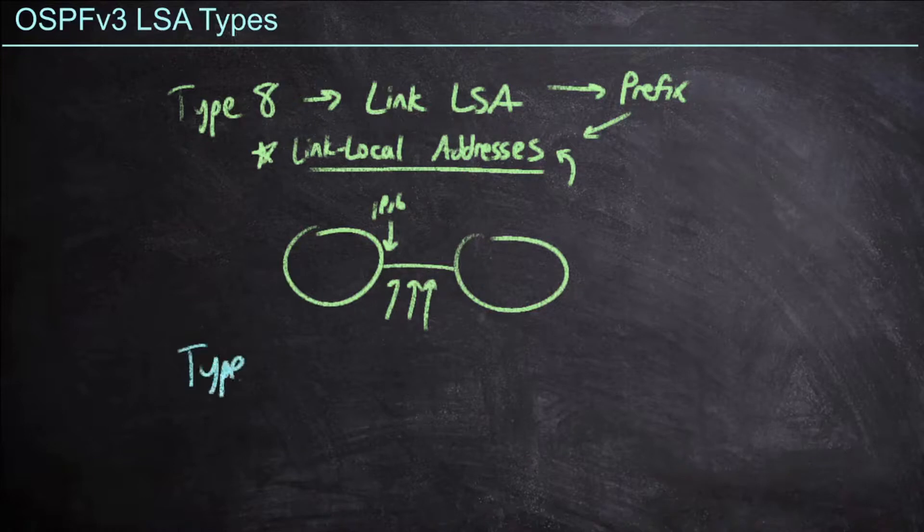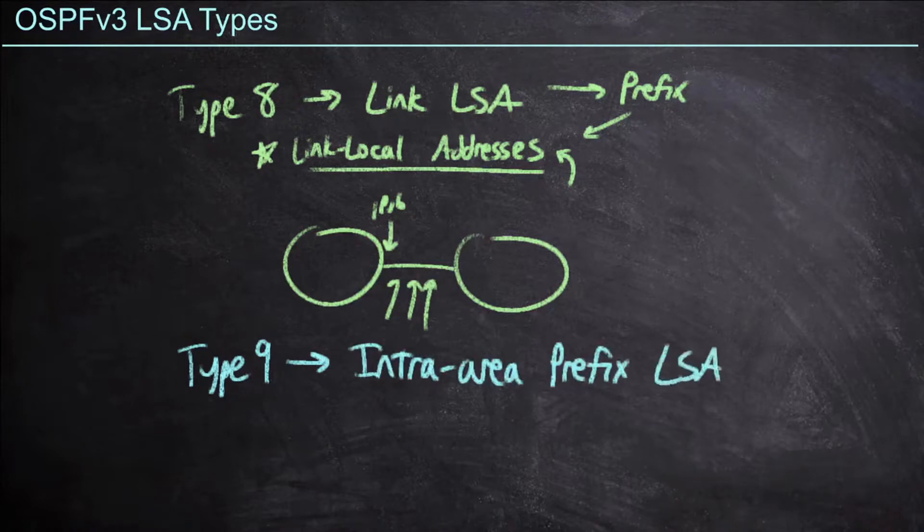Now type 9s are going to fill that gap that we created earlier, when we said we're not going to send prefix information anymore on type 1 and type 2 LSAs. Type 9s are called the intra-area prefix LSAs. Intra-area, meaning it stays internal to a single area, this is going to flood within an area and advertise all of the prefixes that we've left out of those earlier type 1 and type 2s.